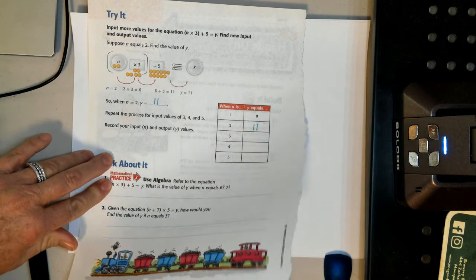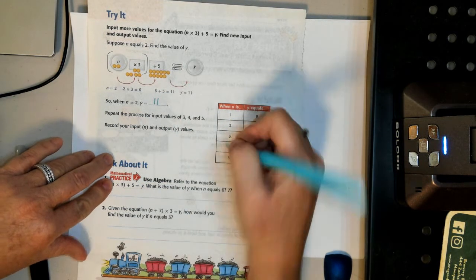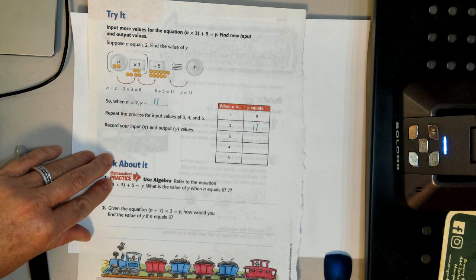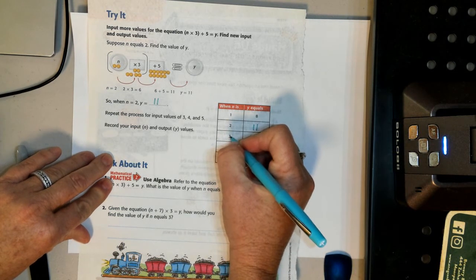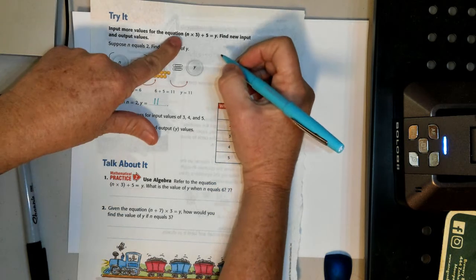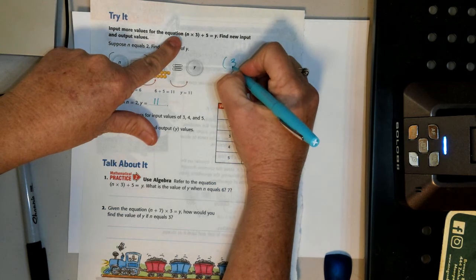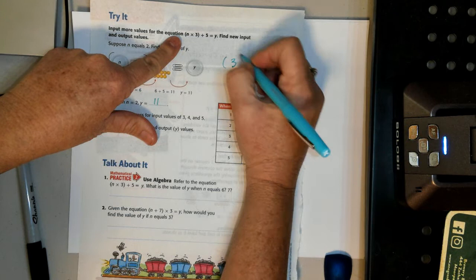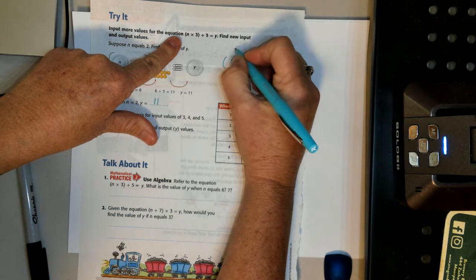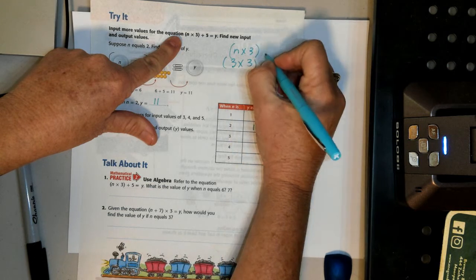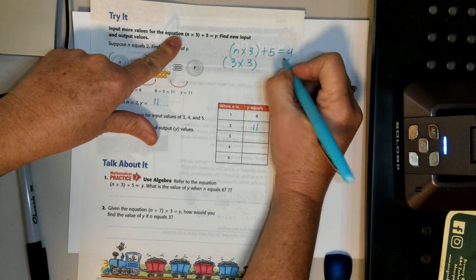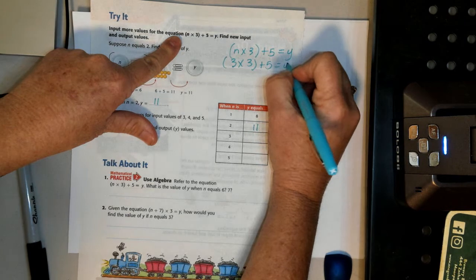And you would just continue doing this with all, they've given you all these numbers. So let's just go ahead and do one more. So I'm going to plug that 3 into the number. So it's going to be 3, because there's a 3 right here, times 3, because it's n times 3, plus 5 equals y.